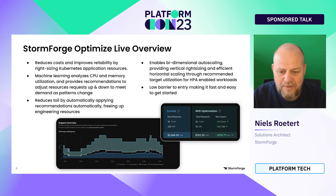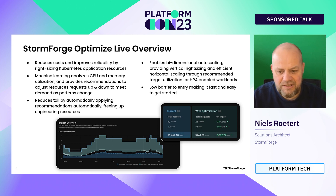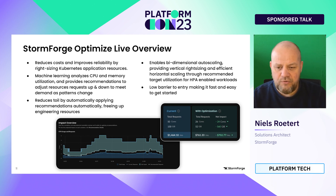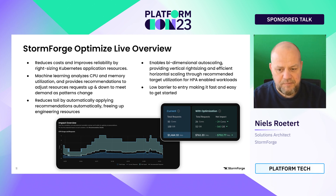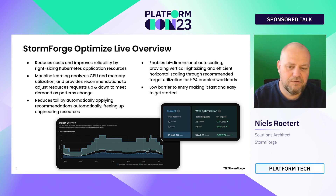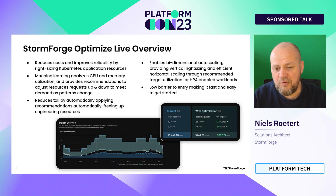The machine learning does all the heavy lifting continuously. If you want to do this manually, you'd have to revisit it over and over again. With Optimize Live, the machine learning does it all for you and does a much better job than humans usually can do manually. It also doesn't just replace VPA — it can also come up with the best possible target utilization for HPA to work in the most optimal fashion.